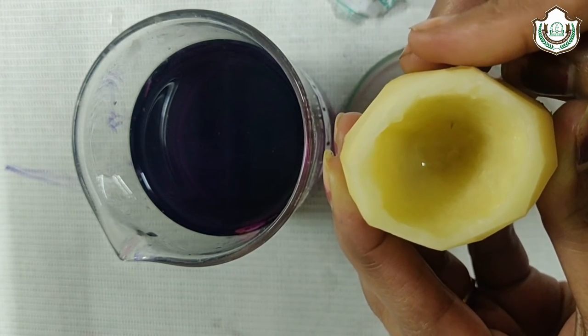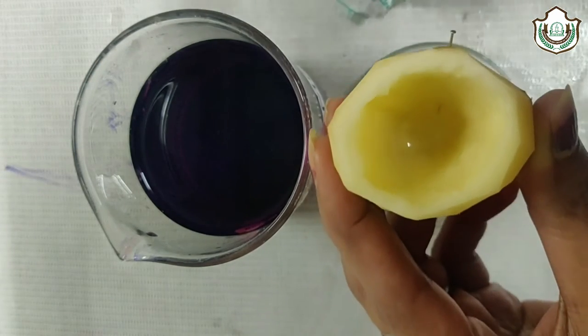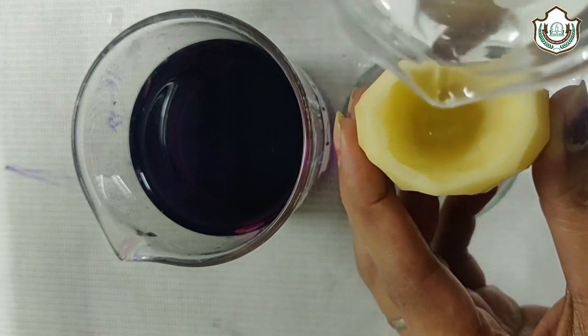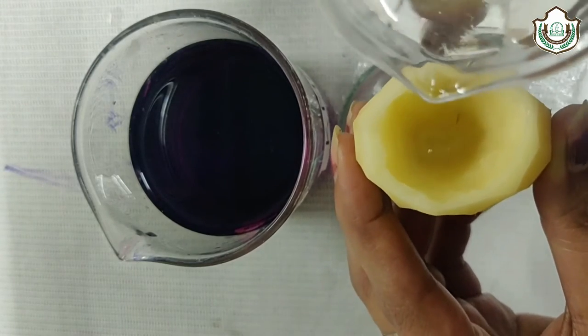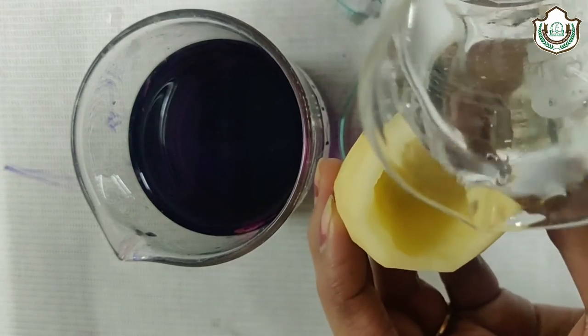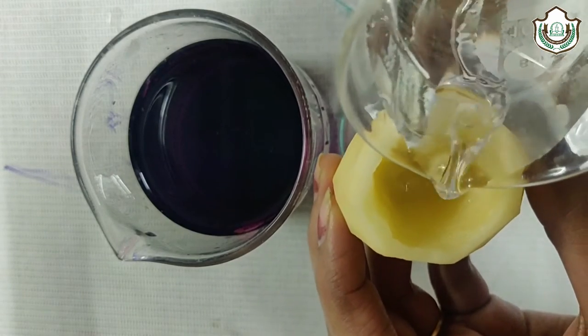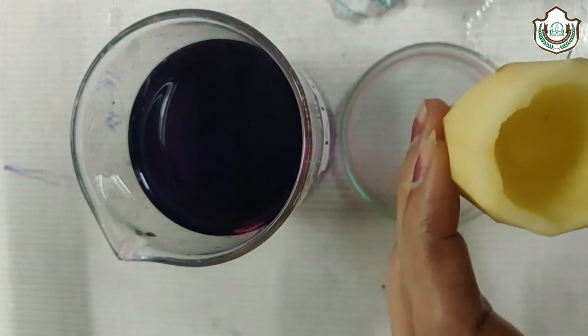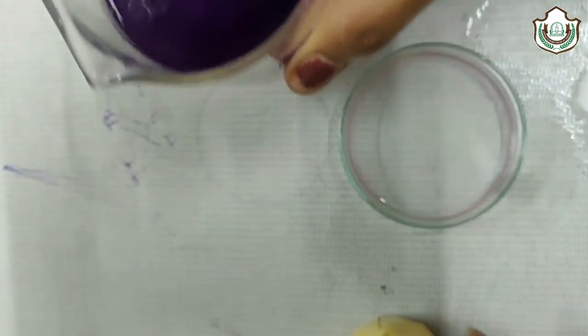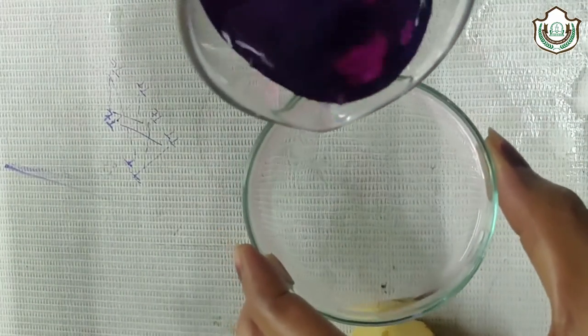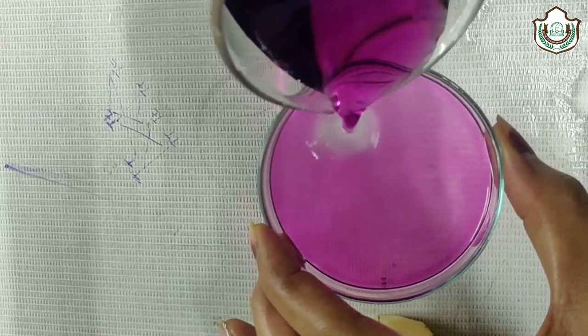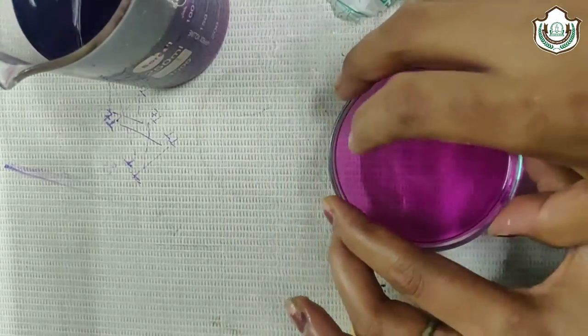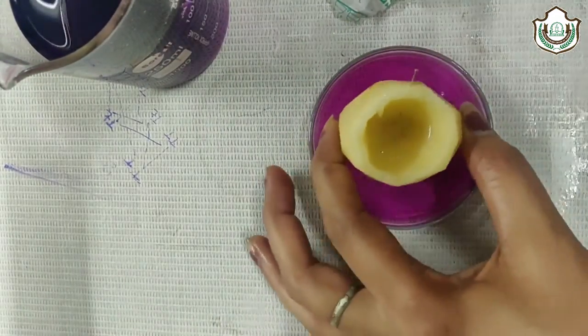Like this. Then we will fill the 10% sucrose solution till the mark of oil pen, like this. And in petri dish, we will fill the potassium permanganate solution and place our potato osmometer in it.